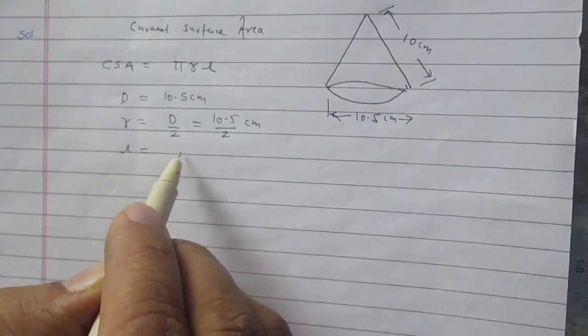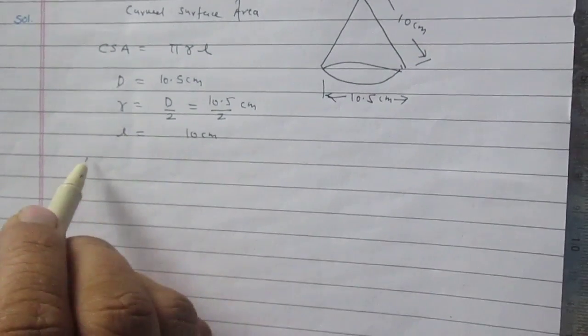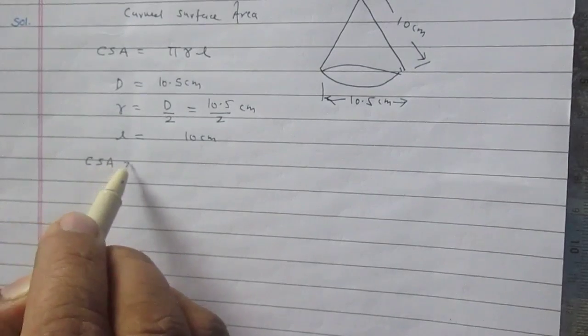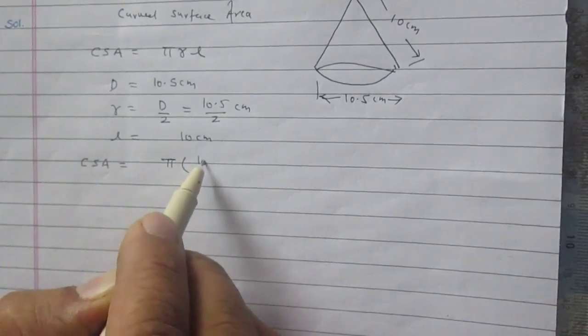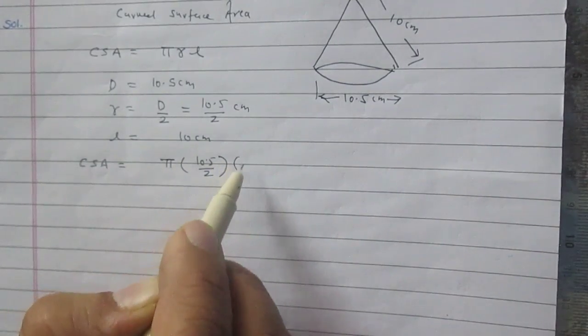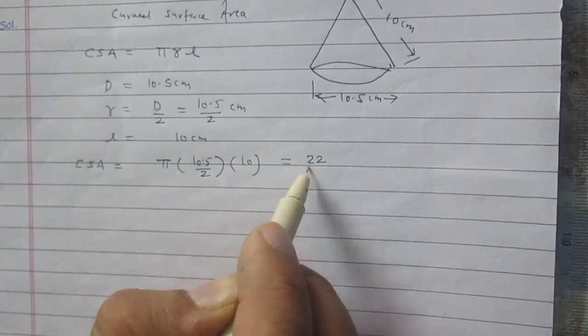Slant height L is 10 cm. So simply curved surface area of the cone is Pi R, which is 10.5 divided by 2, and L, that is 10. The value of Pi is 22 by 7.